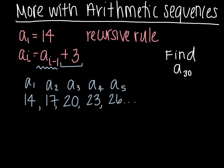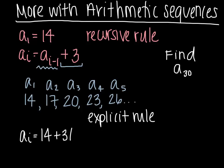Why don't we write the explicit rule for this sequence. a sub i equals - now you know this from the last video - you start with the first term, you add the common difference times i minus 1. Remember that i tells you the term number. This is so much easier because now I have the explicit rule.